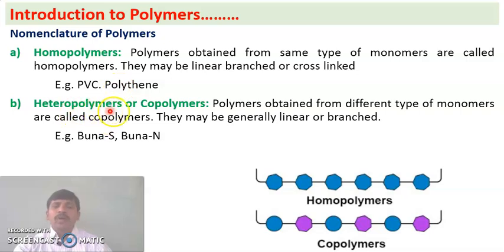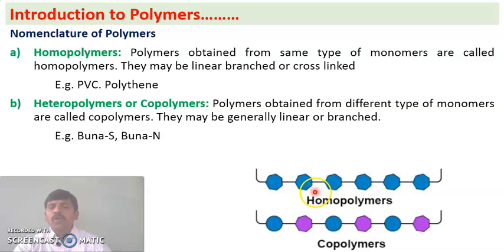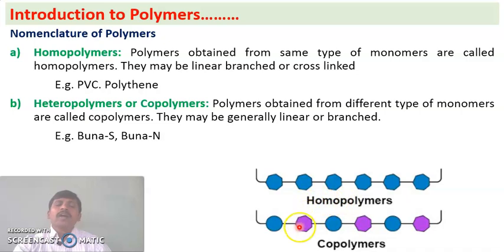Heteropolymers or copolymers are polymers formed from different types of monomers. For example, Buna-S rubber is formed from two types of monomers: 1,3-butadiene and styrene. In the picture, the first diagram represents a homopolymer — all units are formed from the same monomer. The second diagram represents a copolymer, formed from two different types of monomers.